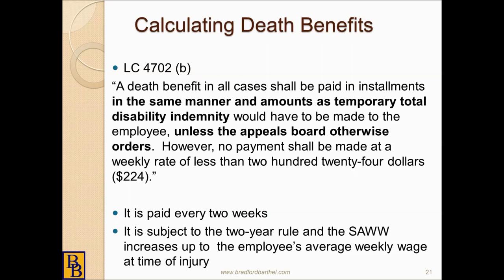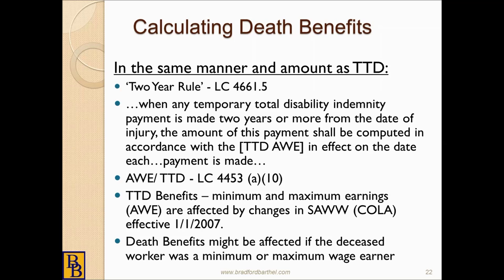Labor Code section 4702B says no payment shall be made at a weekly rate of less than $224 a week. So while a minimum wage earner's temporary or permanent disability rate might be lower, $224 is the minimum benefit for death benefits — the minimum weekly rate. It's paid every two weeks, and because you're paying it as temporary total disability, it's subject to the two-year rule. Labor Code section 4661.5 says that any TTD benefit paid two years or more from the date of injury shall be computed in accordance with the current TTD average weekly earnings as of the date the payment is made.